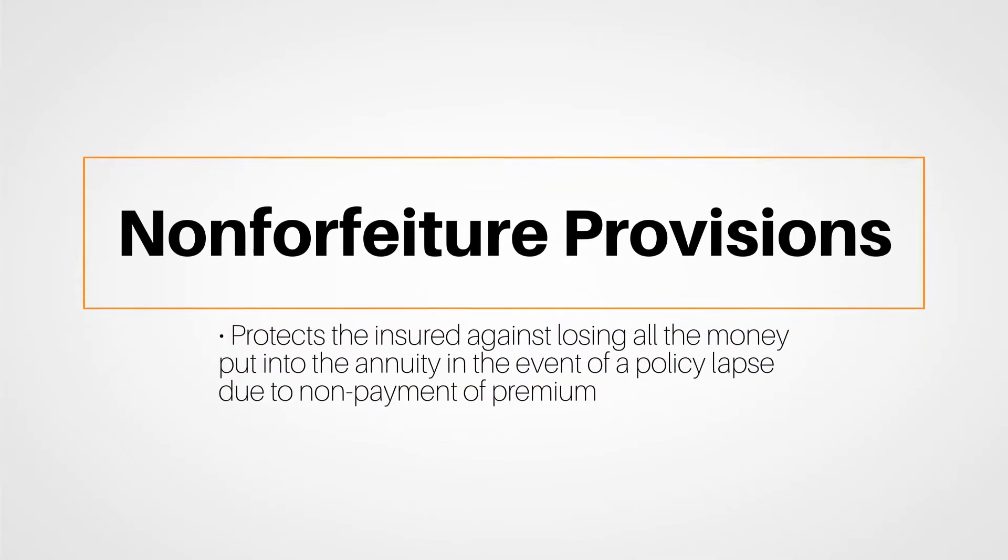IRS early withdrawal penalties can be substantial. If an annuitant withdraws funds before age 59 and a half, the IRS will assess a 10% penalty tax in addition to any income taxes due based on the distribution. This portion ended with a look at non-forfeiture provisions, which protect the insured against losing all the money put into the annuity in the event of a policy lapse due to non-payment of a premium.